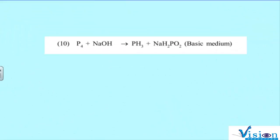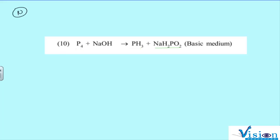Welcome back to my lecture. We'll continue with one more sum from your textbook. Question number 10: P₄ + NaOH gives PH₃ + NaH₂PO₂. यह है question number 10 from your textbook — P₄ plus NaOH gives pH₃ plus NaH₂PO₂.